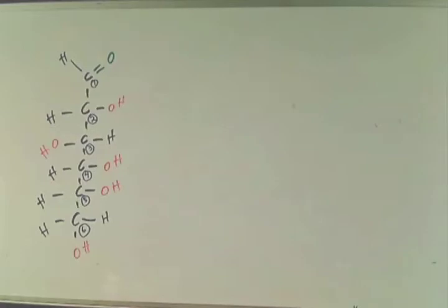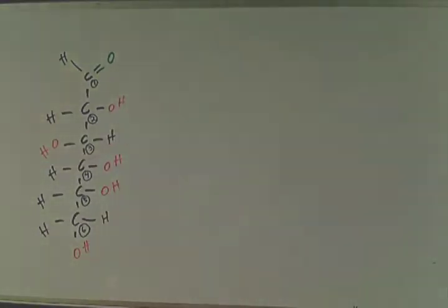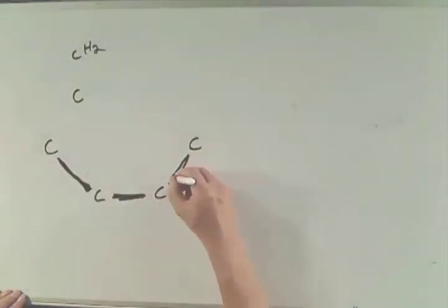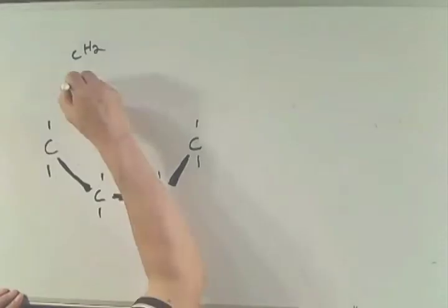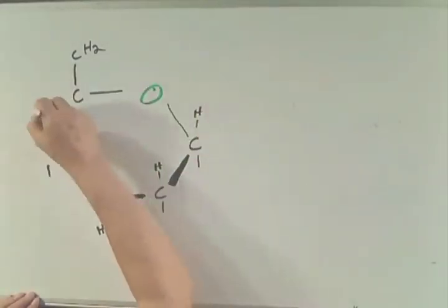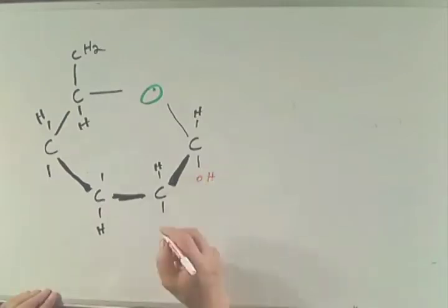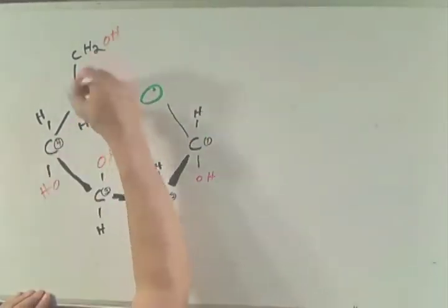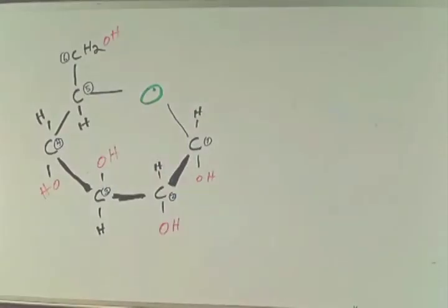The 1' oxygen forms a hemiacetyl group with the 5' carbon of the same molecule and makes a ring structure. The ring structure forms a boat and chair configuration, so it's stable, but there are variations in what kind of shape it can take.